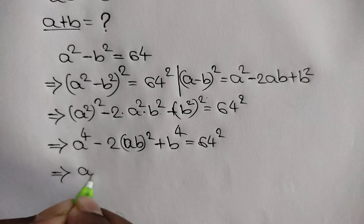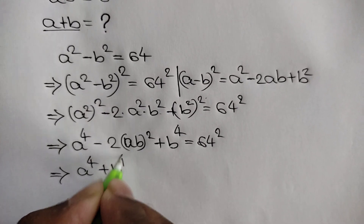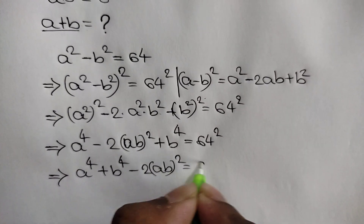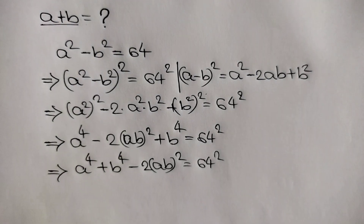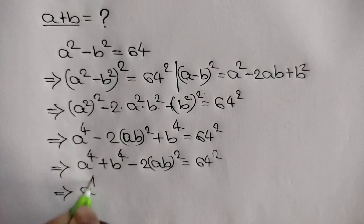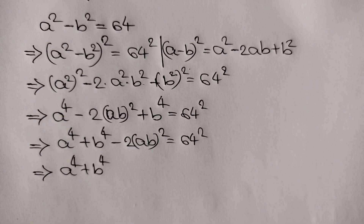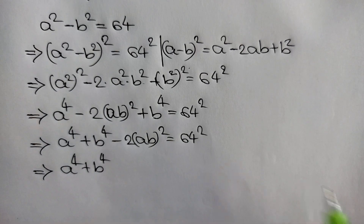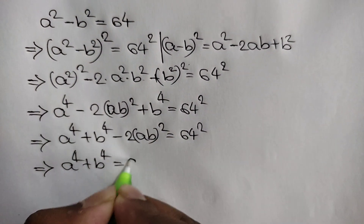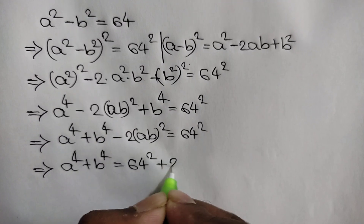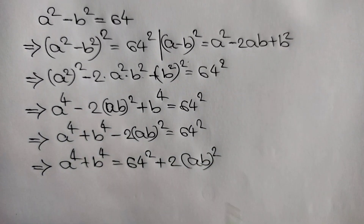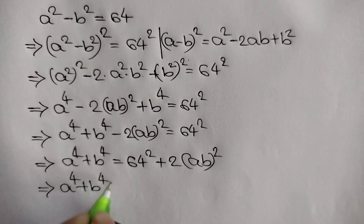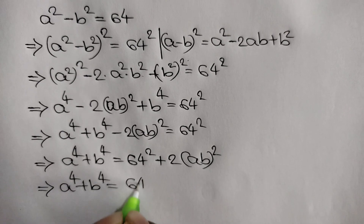Rearranging, we can write a to the power 4 plus b to the power 4 minus 2 times ab whole squared is equal to 64 squared. Taking negative 2 times ab whole squared to the right side, we get a to the power 4 plus b to the power 4 is equal to 64 squared plus 2 times ab whole squared.